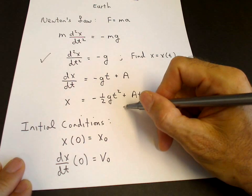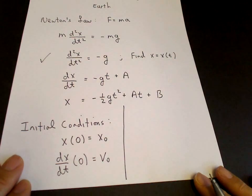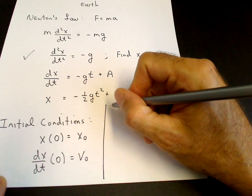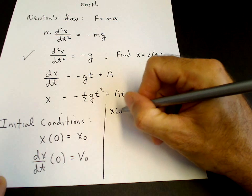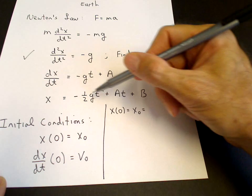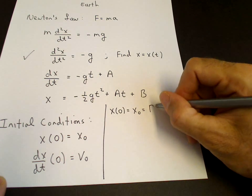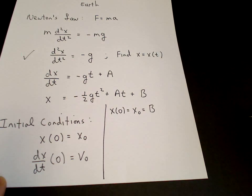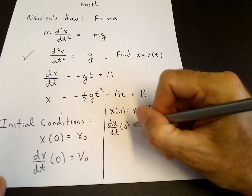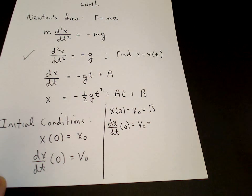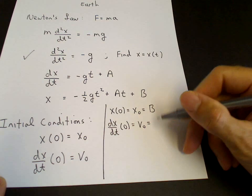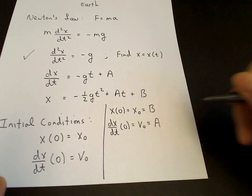Let me squeeze it in here. So those are sufficient to determine a. So we have x of 0 equals x0, and we substitute in our equation for x, t equals 0 - that tells us what b is. Now we have dx dt at t equals 0 equals v0, and we substitute that into our equation for dx dt, t equals 0 - that tells us what a is.